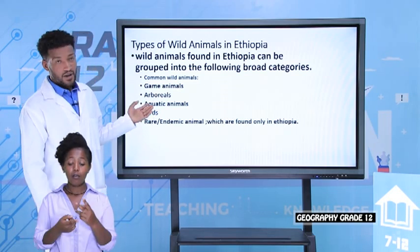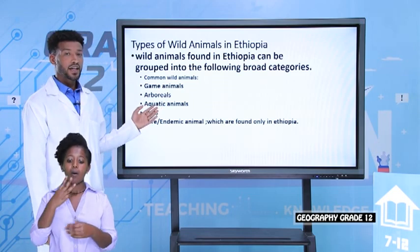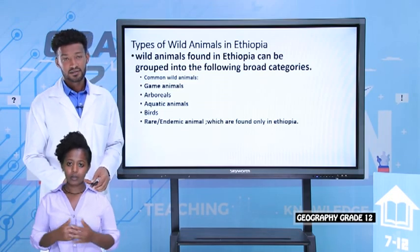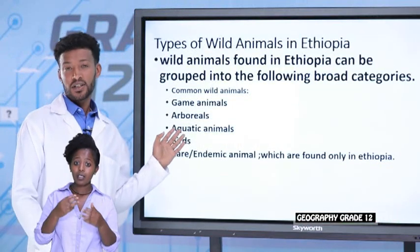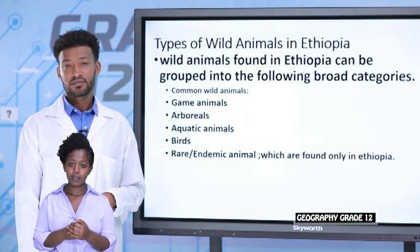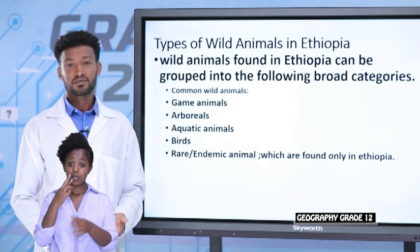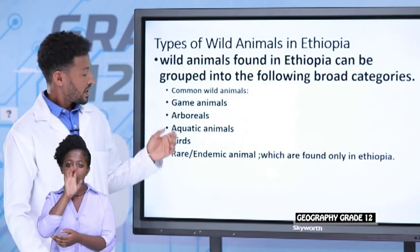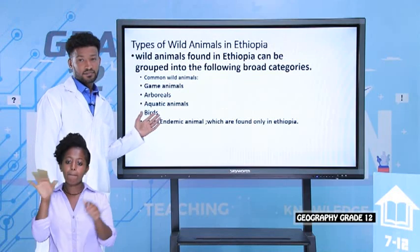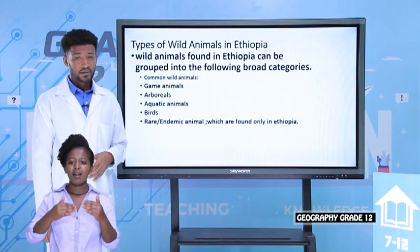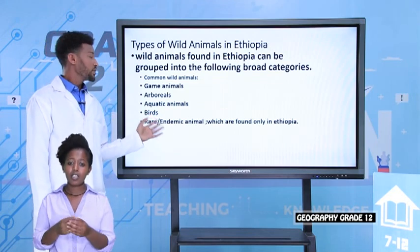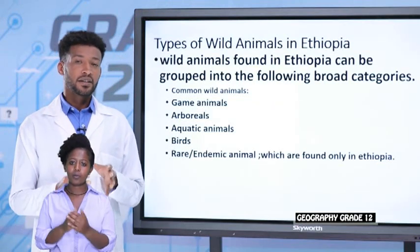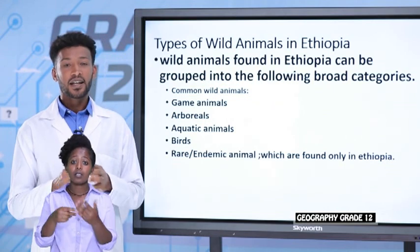The fourth category is aquatic animals — animals found in water bodies. Examples include fish, crocodile, and hippopotamus. Another group is birds. The most notable bird in Ethiopia is the flamingo, which is confined to the Rift Valley lakes of the country.